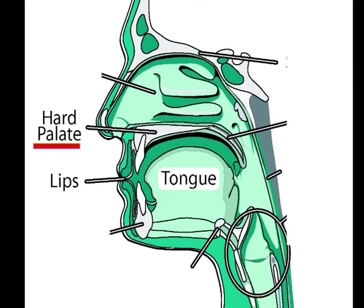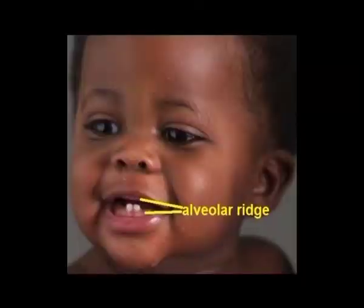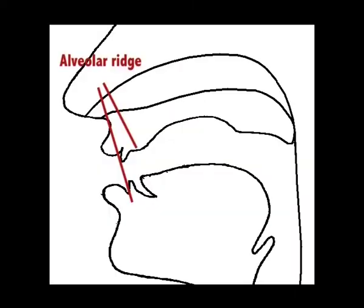The hard palate is a bony plate in the region of the upper mouth. The interaction between the tongue and the hard palate is essential in the formation of certain speech sounds, notably T, D, and J. The alveolar ridge is a jaw ridge on the upper and lower side of the mouth, between the upper teeth and the hard palate or on the bottom of the mouth behind the lower teeth. The alveolar ridges contain the sockets — that is, alveoli — of the teeth. Of course, there is also the upper lip, the teeth and the lower lip.